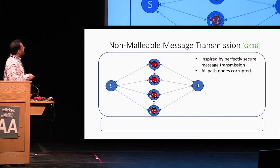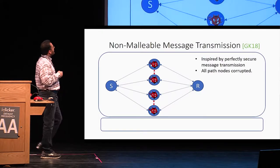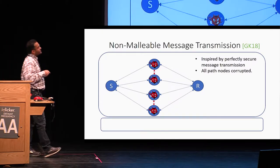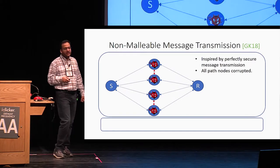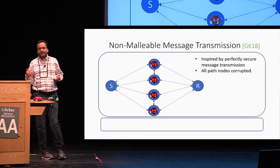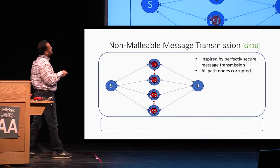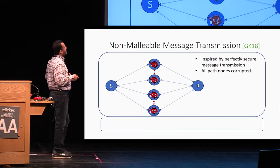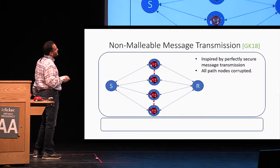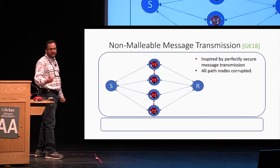Another application of non-malleable secret sharing was given in the work of Goyal and Kumar, who introduced the notion of non-malleable message transmission. This problem is inspired by perfectly secure message transmission, and there have been a number of works in this direction. In this setting, we have a sender trying to send a message to the receiver, and all the nodes on the path are corrupted.